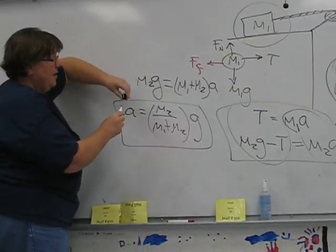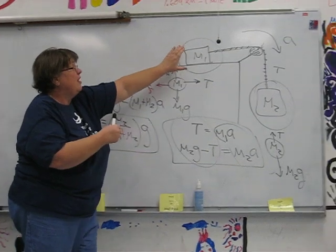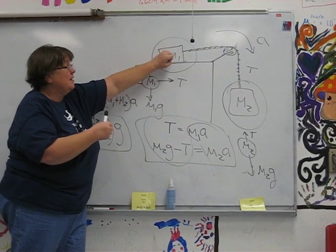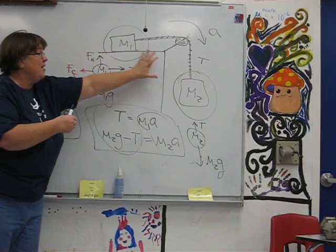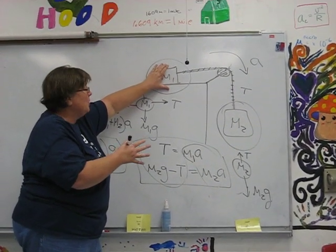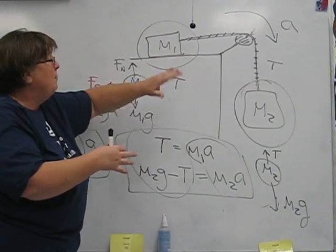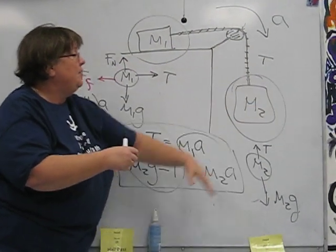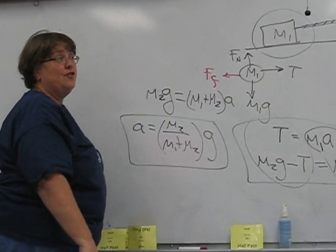This form is very nice because we can check the limiting cases to see if we've done things correctly. And what I mean by that is if M2 were insignificant compared to the mass of M1, or M2, I'm sorry.